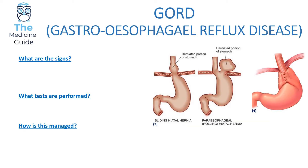GORD crops up in practically every single exam. GORD is when there is an inappropriate relaxation of a weakened lower oesophageal sphincter, leading to reflux of gastric acid and food content. Two types of hiatal hernias contribute to GORD: a sliding hiatal hernia, where the fundus or a small portion of the cardia herniates above the diaphragm, and a para-oesophageal rolling hiatal hernia, where both the fundus and cardia are pushed through the oesophageal sphincter.